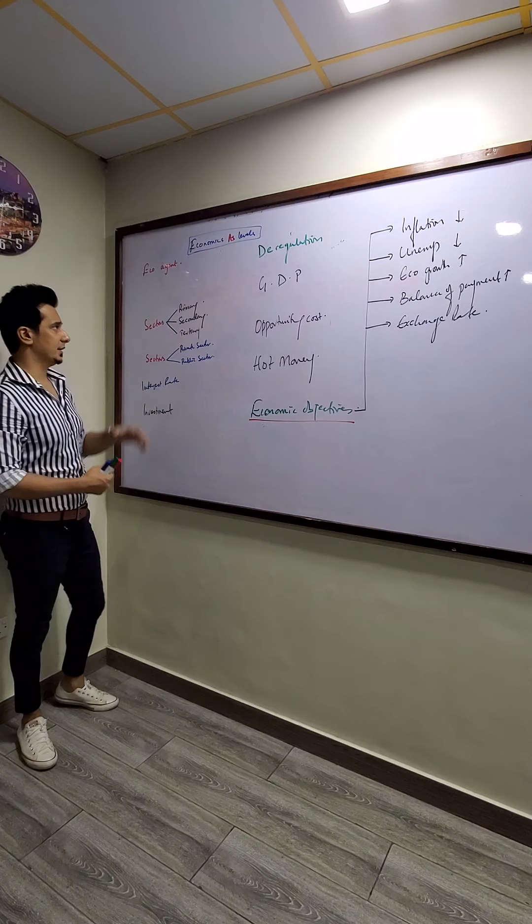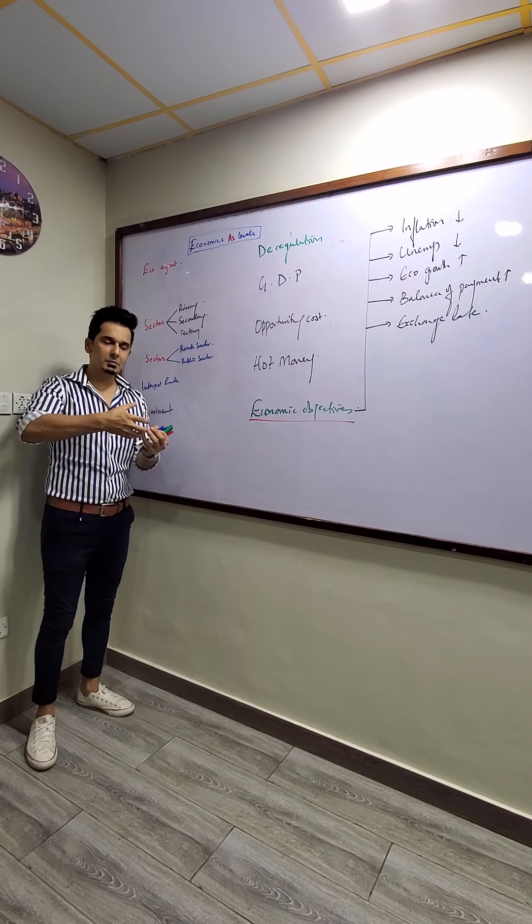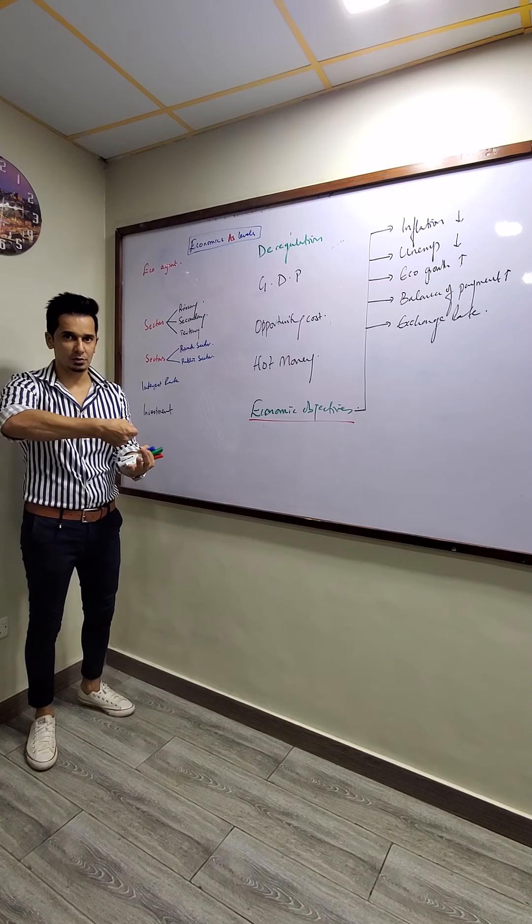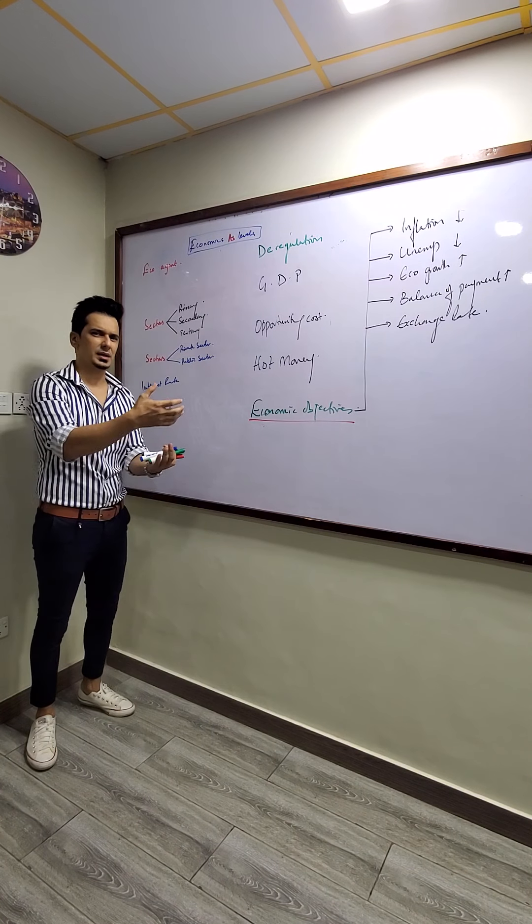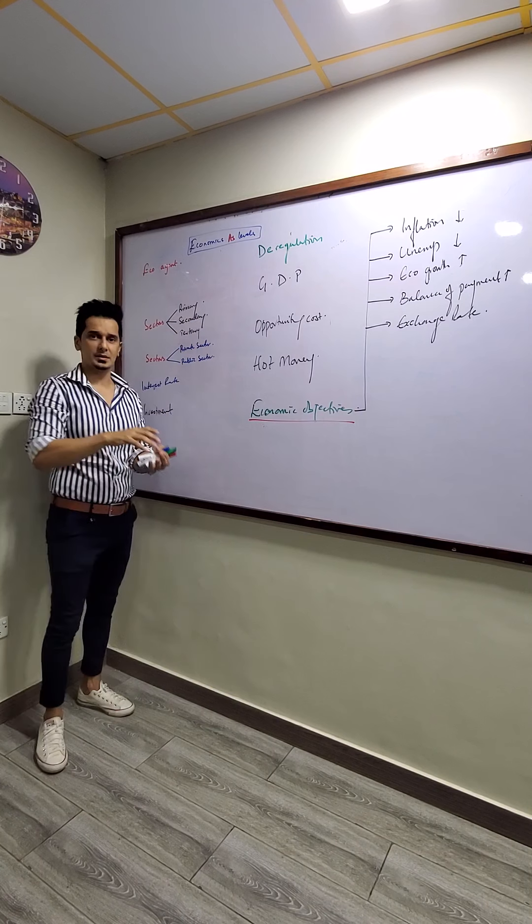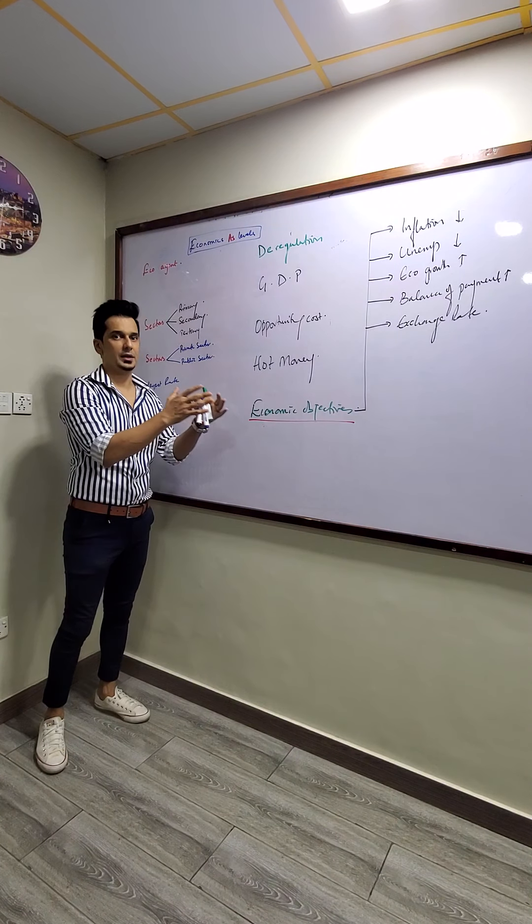What are the sectors that we have in an economy? Primary sector, secondary and tertiary. Primary sector is a sector which is involved in the extraction of natural resources like fishing, mining. Secondary sector is involved in the manufacturing or processing of input into output.